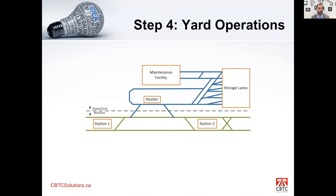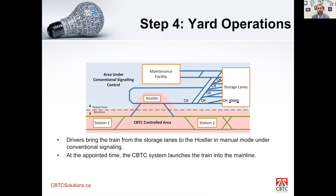A CBTC system needs to have control of as much part of the property as possible in order to be able to efficiently operate the system. This applies to the yard as well. So the CBTC system has to come into the yard to be able to launch these trains at the appointed time efficiently. If you have a human operator managing that, you'll get into some trouble. So the CBTC system has to, as a bare minimum, be able to control a hostler or the launch point where the trains will be launched from.